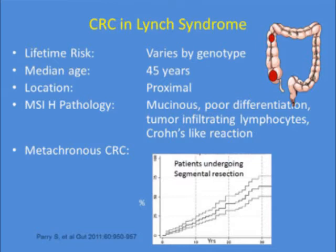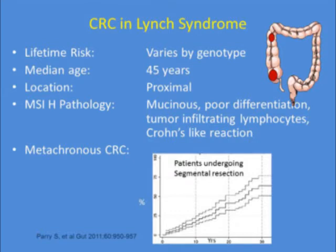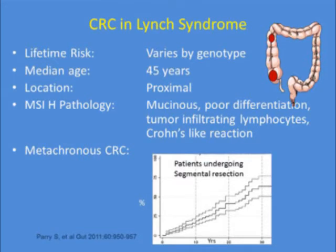A study looked at Lynch syndrome patients who underwent either an extended hemicolectomy with ileo-rectal or ileo-sigmoid anastomosis versus those who didn't know they had Lynch and underwent segmental colectomy. In 11 years of follow-up, no one with the extended colectomy developed cancer, whereas 25% of the segmental colectomy group had a metachronous cancer by about 15 years. This underscores the importance of identifying these individuals before surgery.